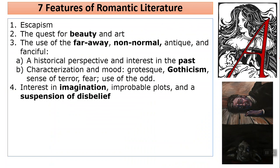Interest in the imagination — so again, plots that aren't just things that happen every day. We get that in realism later on; you'll have, you know, two women gossiping over tea. In one of Nathaniel Hawthorne's stories, we have a minister who always wears a black veil and no one knows why — a little bit of an improbability that not even his fiancée would be able to see his face. In the other story, Young Goodman Brown, we have a man being tempted by the devil — a suspension of disbelief and some elements of fantasy as well.